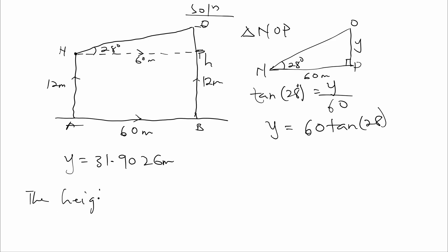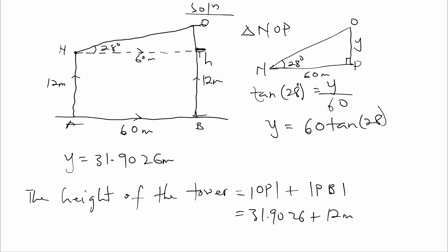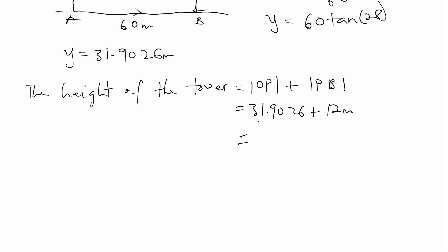The height of the tower will be equal to the length of OP — from here to here — plus from here to here. So the height of the tower will be 31.9026 plus the length of PB. The length of OP is 31.9026, and the length of PB — from here to here — is 12 meters.